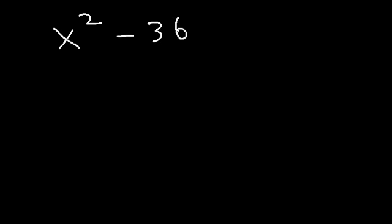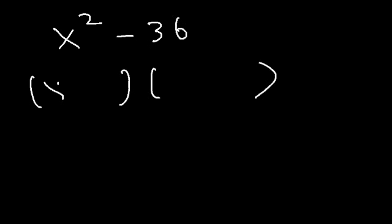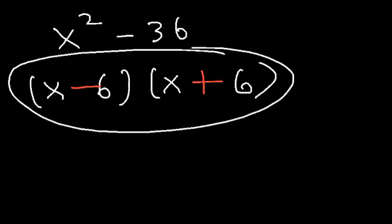Now let's try some more examples like this. Let's factor the expression x squared minus 36. The square root of x squared is x, and the square root of 36 is 6. One factor will be minus and the other will be plus, giving (x minus 6)(x plus 6). That's the answer for this one.